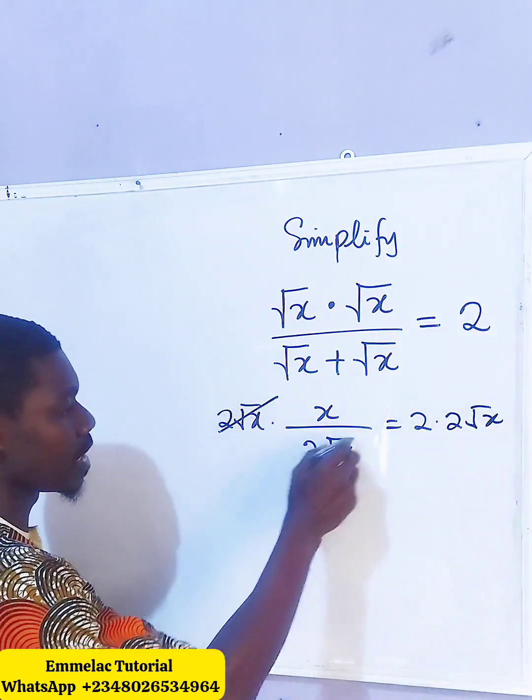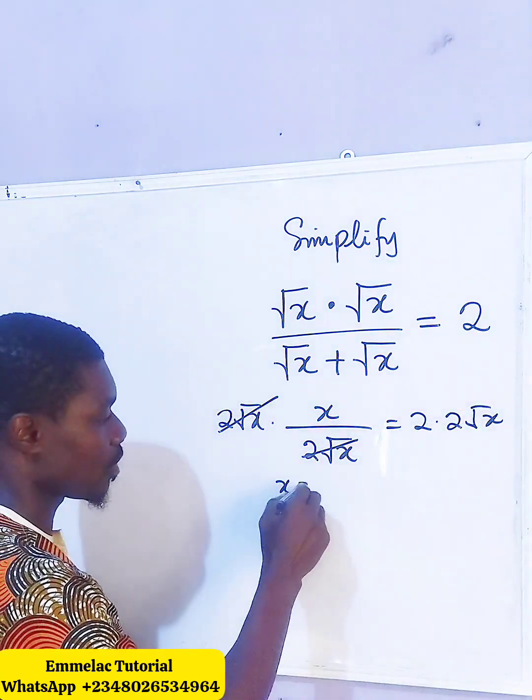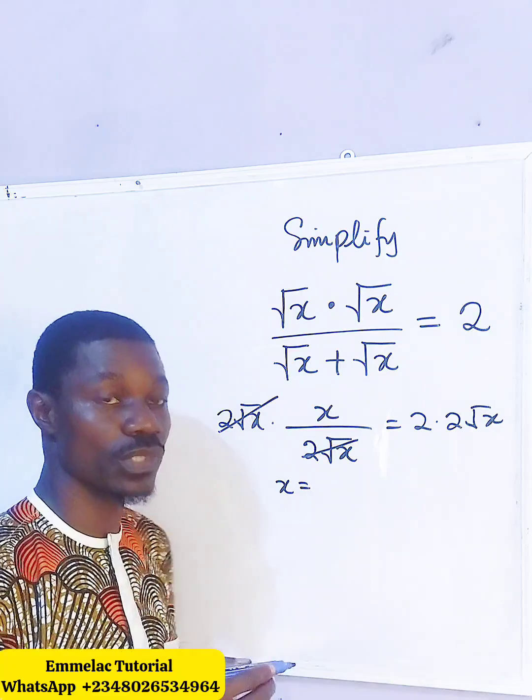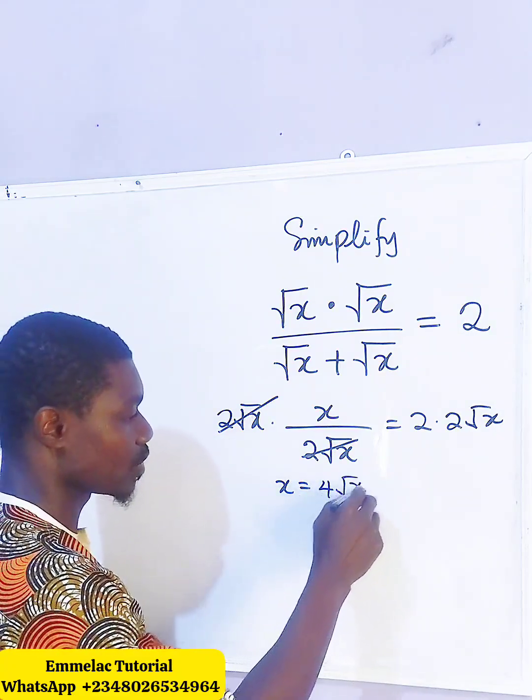This way, this eliminates this, we are left with x equals, now 2 times 2 root x will give us 4 root x.